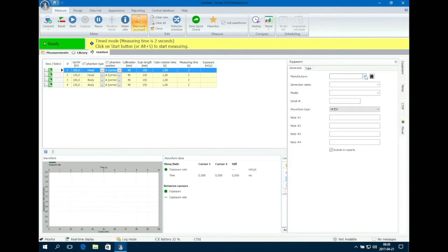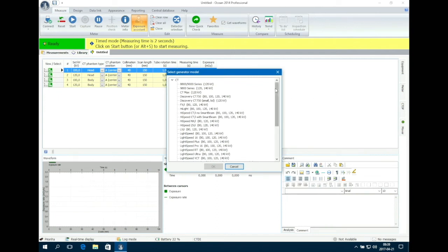This can be done under the manufacturer drop down menu. To specify the model of your CT, click on the binocular symbol and choose the model. Click OK.